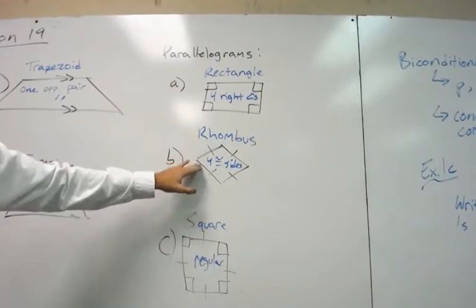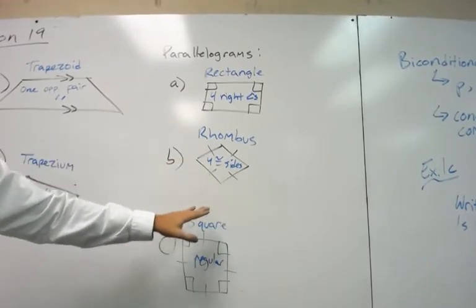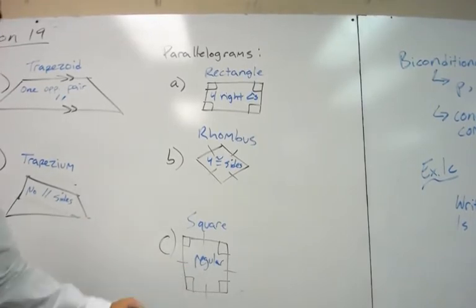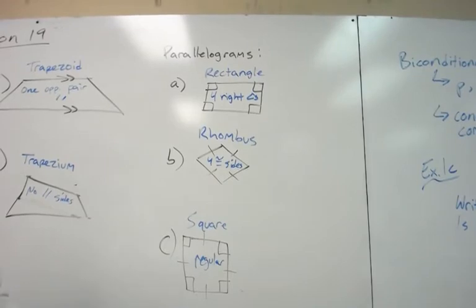Rhombus has four congruent sides. And then a square, we know has four congruent sides and four congruent angles. Therefore, it is regular. So those are the three different types of parallelograms, and that's really all this lesson is.